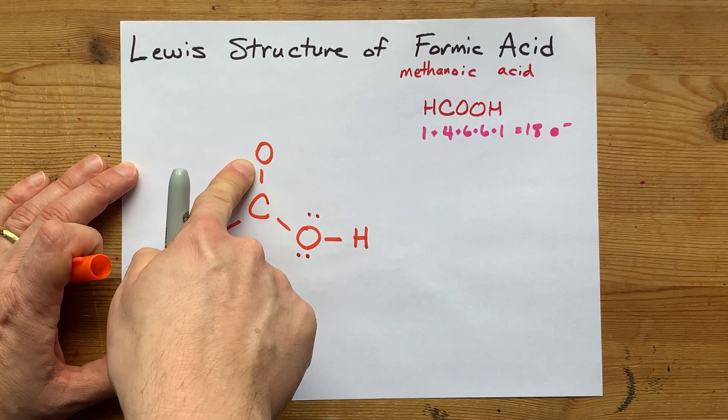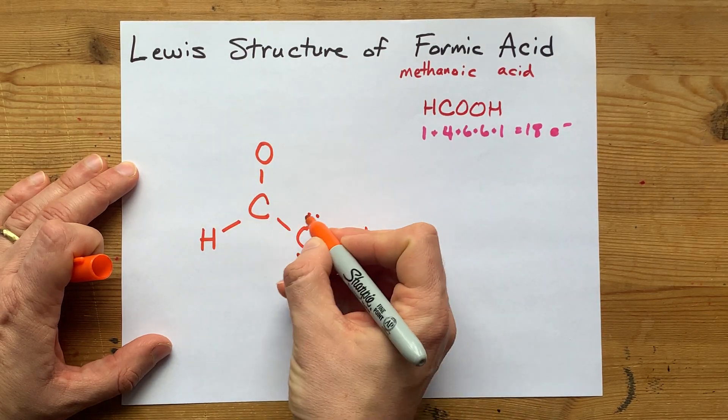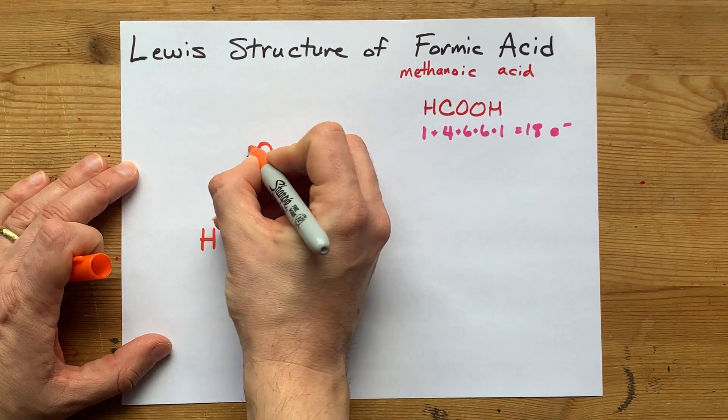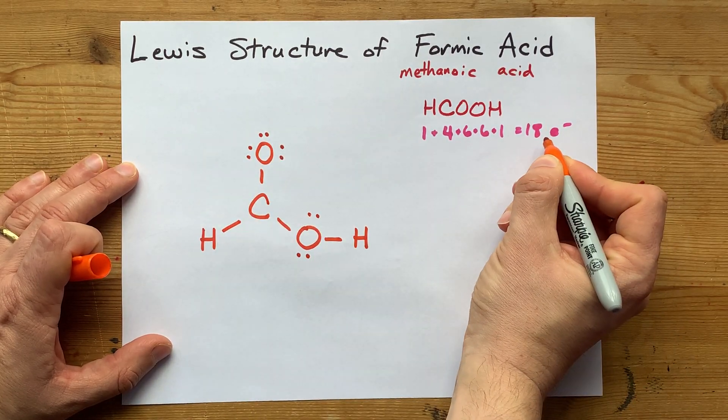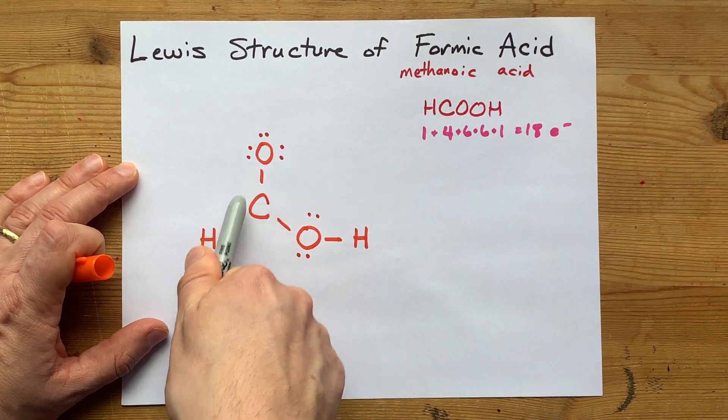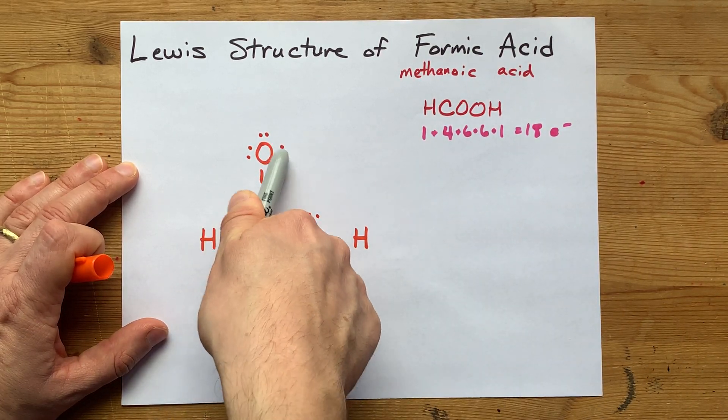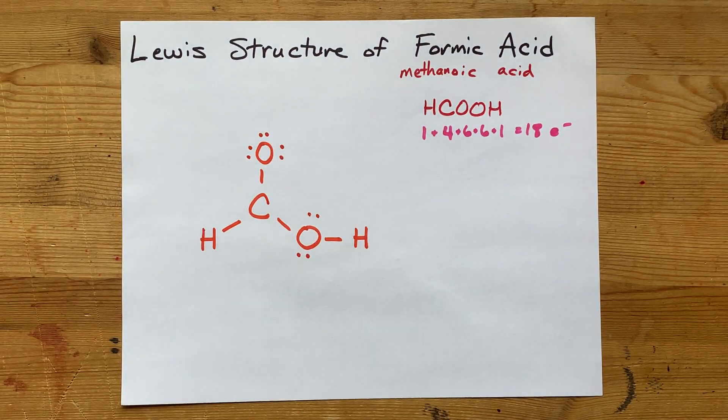Now, this oxygen has one bond, so it's already two. Thirteen, fourteen, fifteen, sixteen, seventeen, eighteen. Okay, I've got to stop, because I'm only allowed to put 18 electrons total. But also, now that oxygen is happy with its eight electrons. It satisfies its octet rule.